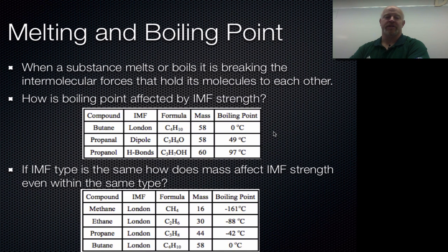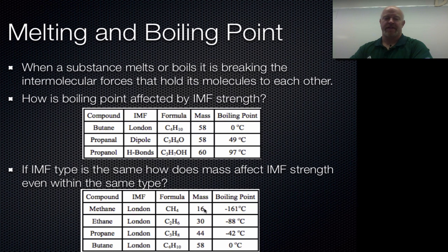The second piece of this puzzle is what happens when the intermolecular force type is actually the same. If we look at this graphic, we have London dispersion forces for all of these: methane, ethane, propane, and butane. However, these are definitely not the same size — we end up having a mass of 16 all the way up to 58, getting incrementally bigger as we add more carbons and hydrogens.